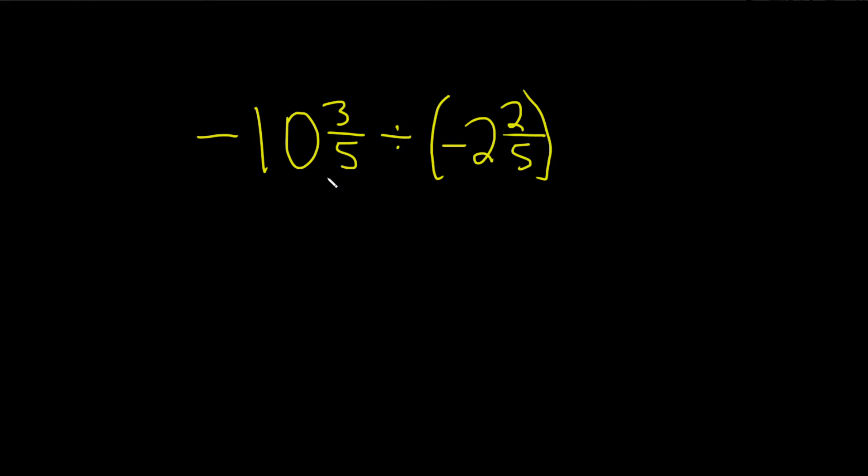In this problem we have a negative mixed number being divided by another negative mixed number. The very first step is to turn these mixed numbers into improper fractions.